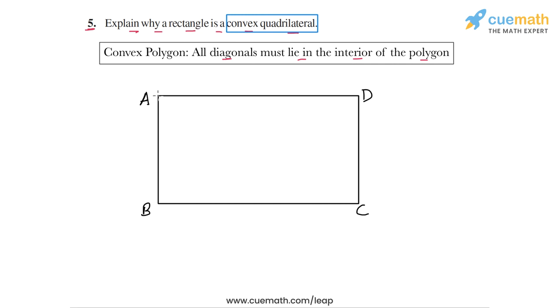We have the diagonal AC and we have the diagonal BD. We can see that both of these diagonals lie completely inside the rectangle. So let's write out this reason: Both diagonals of any rectangle lie inside that rectangle.